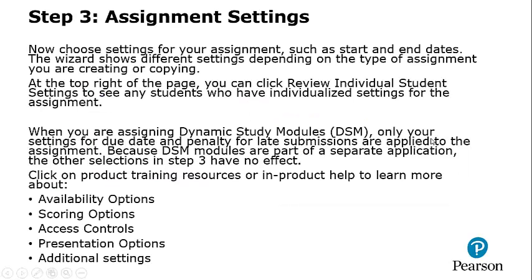Step 3: Assignment Settings. Now choose settings for your assignment, such as start and end dates. The wizard shows different settings depending on the type of assignment you are creating or copying. At the top right of the page, you can click to Review Individual Student Settings to see if any students have individual settings for the assignment. If you are assigning a Dynamic Study Module, or DSM, only your settings for due date and penalty for late submissions are applied; the other selections in this step have no effect. Click on your product training resources or in Product Help to learn more about availability options, scoring options, access options, presentation options, and additional settings.